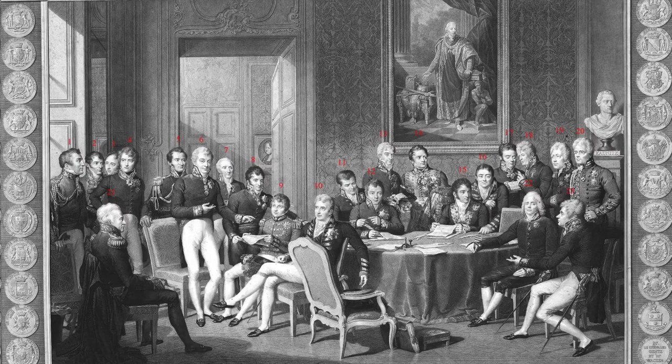The Congress functioned through formal meetings such as working groups and official diplomatic functions. However, a large portion of the Congress was conducted informally at salons, banquets and balls.